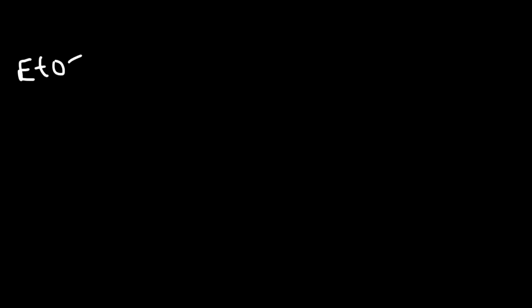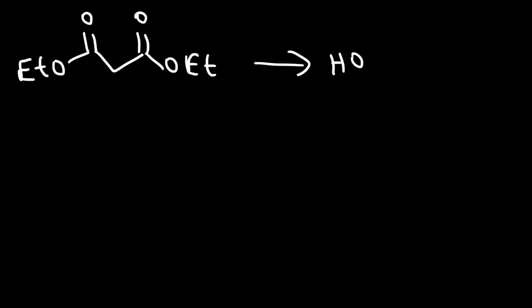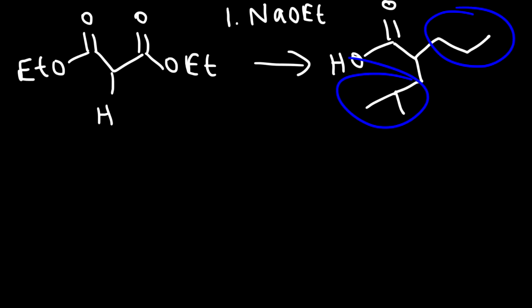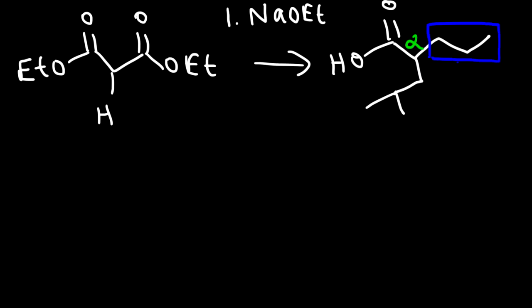Starting from the same reactant, what reagents do we need in order to make this product? Go ahead and pause the video and find the reagents needed. We know the first step is sodium ethoxide to remove the alpha hydrogen. It looks like we're adding two R groups, so we'll need two different alkyl halides. The first thing to do is identify the alpha carbon and the two groups that stick out from it. The first R group contains three carbon atoms, and the second one has four carbon atoms.